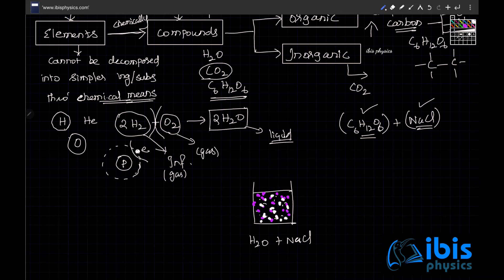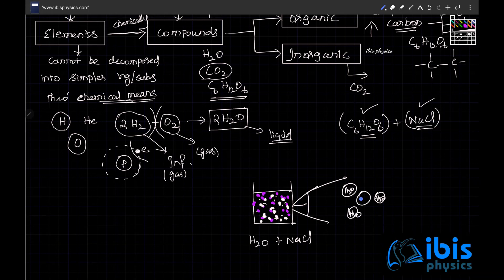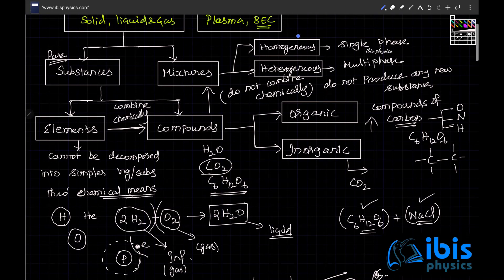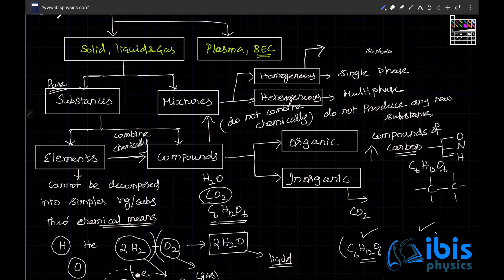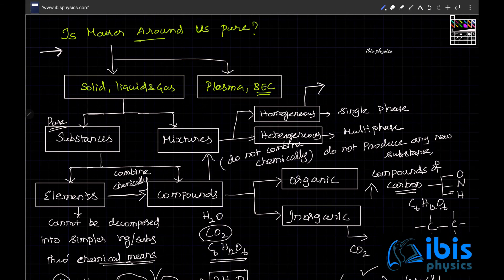If you zoom in on the salt-water mixture, every little piece is H₂O and in between you get pieces of sodium chloride. That kind of mixture is called a homogeneous mixture. Homogeneous mixtures have further classifications. Solutions are generally of two types: homogeneous and heterogeneous. Within solutions we have categories like colloidal solution, pure solution, and suspensions.